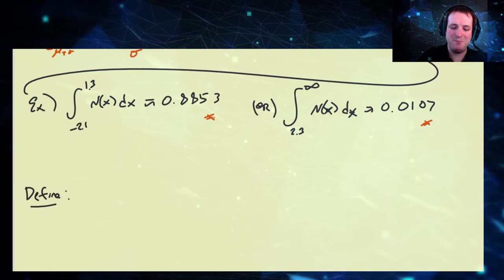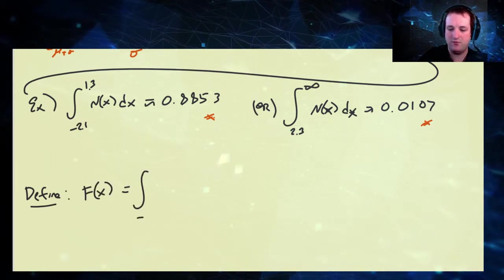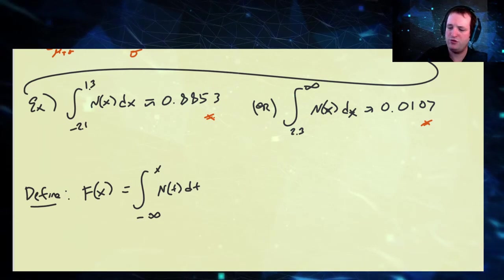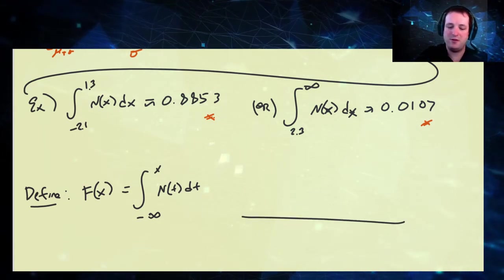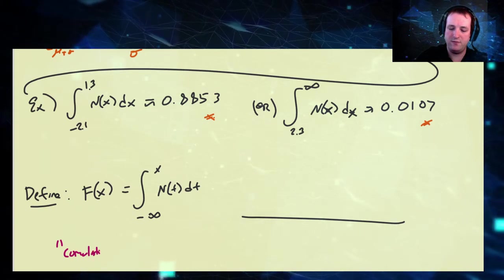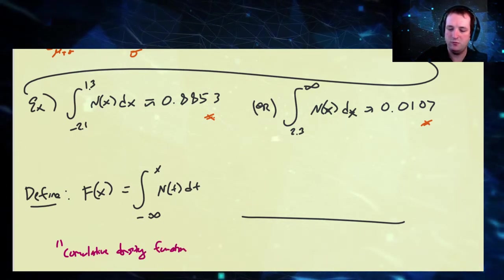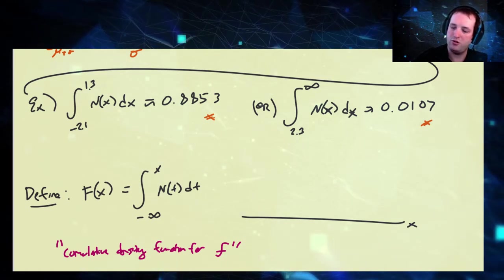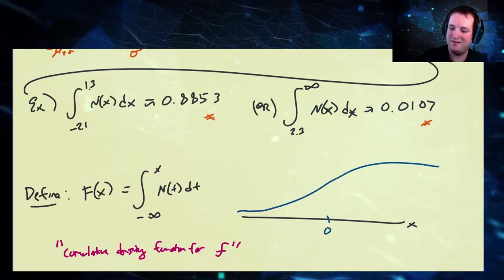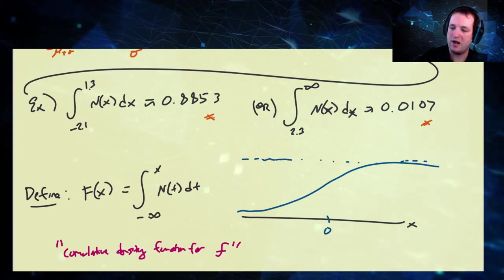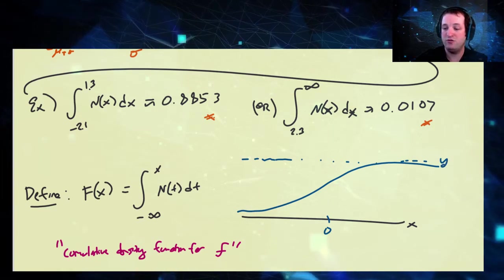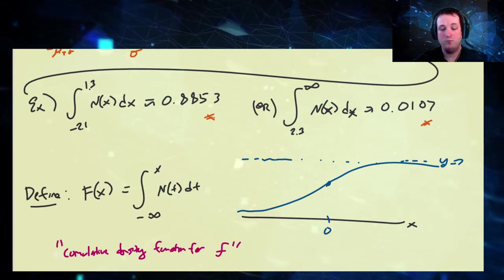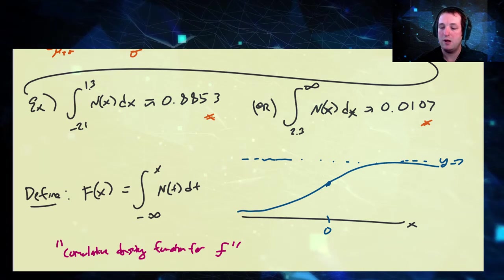We're going to define capital F of x as the integral from minus infinity to x of the standard normal distribution with respect to some other variable. This is what we typically refer to as the cumulative density function for the PDF. As we approach along this domain, since this is a probability density function, the total area starts at zero from the leftmost boundary and converges to one at the rightmost boundary. So it's a monotonically increasing function — always is for a cumulative density function.